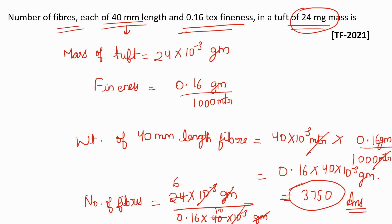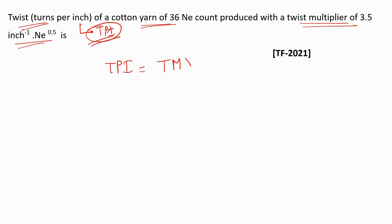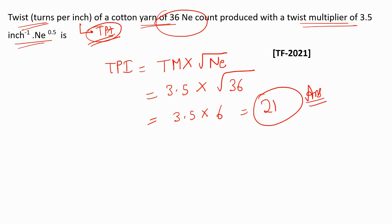Next question: find the twist per inch (TPI) of a cotton yarn of 36 Ne count produced with a twist multiplier of 3.5. The formula is TPI = twist multiplier × √(count in indirect system). So TPI = 3.5 × √36 = 3.5 × 6 = 21. The answer is 21 TPI.